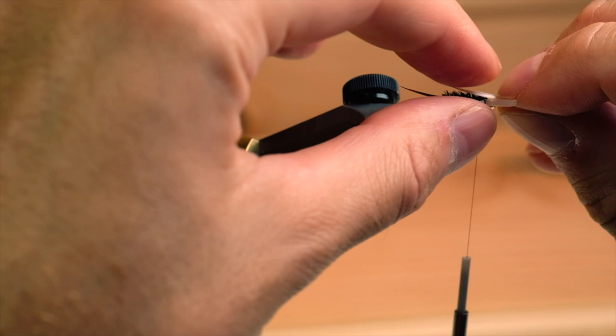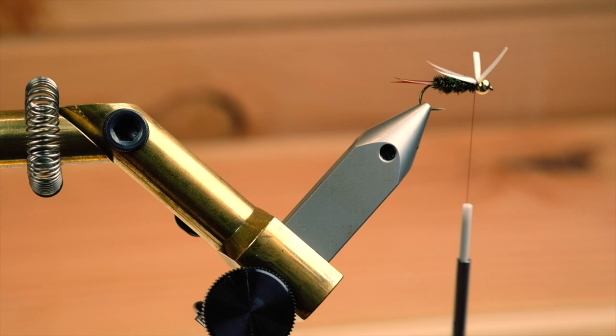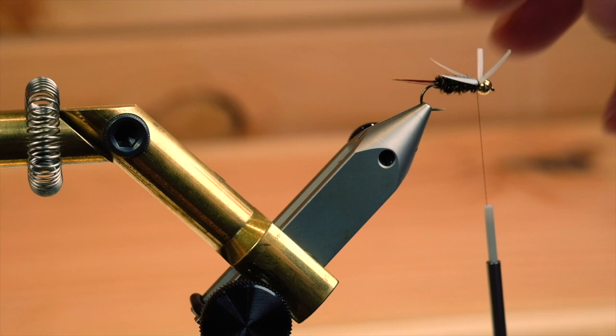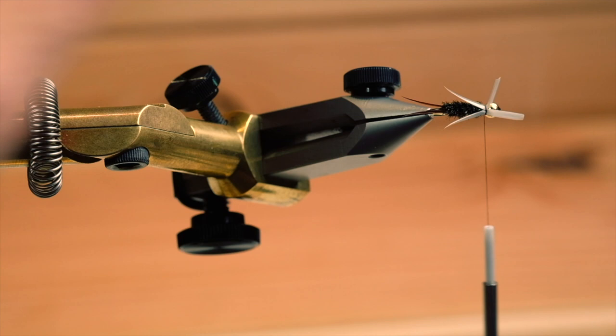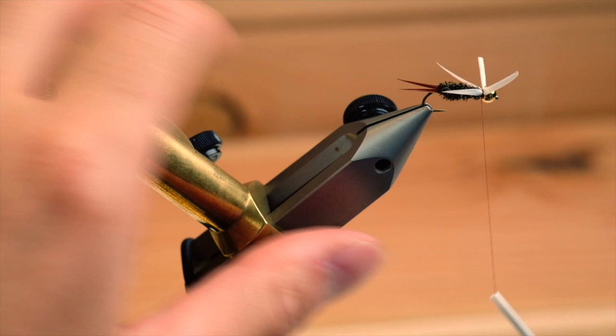Two turns. As you can see, they're right on the top of the fly, a little bit on the side, a little bit on the top. Check it. I just want this to be a little bit more on the side. That looks good, and you can tie it down. Trim away the excess.